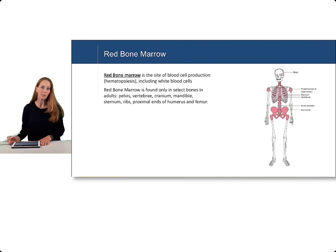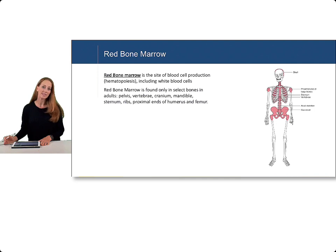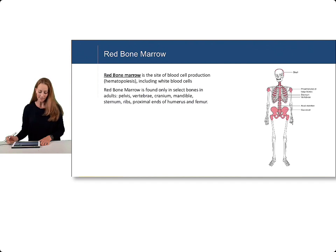Let's start with the red bone marrow. Red bone marrow is the site of blood cell production, or hematopoiesis, and that includes production of white blood cells, in addition to red blood cells and platelets. We're not going to talk about the process of hematopoiesis today, but it's important to understand that the white blood cells are the central cells of the immune system.